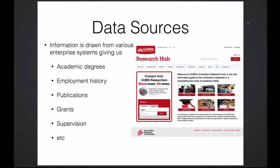One problem we came across was that enterprise systems were built for a specific purpose, and that was usually not for the data to be displayed publicly. For a lot of the data that's not a huge issue — publication records are fairly standardized. But grant information in particular was not very well covered in our systems, sometimes just because we weren't the managing organization, so if things changed later in terms of titles and amounts, that wasn't necessarily reflected in our systems. We also didn't necessarily need descriptions for the reporting purposes those systems were built for.